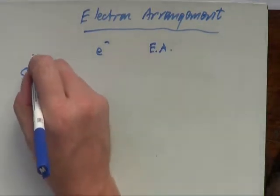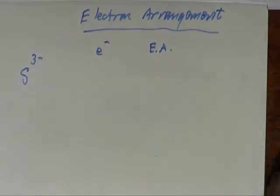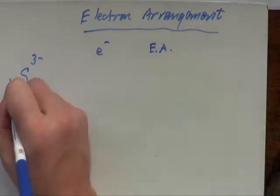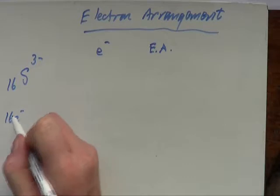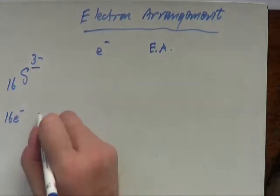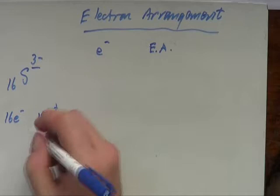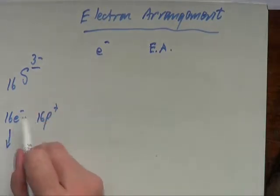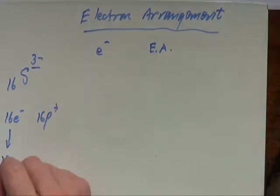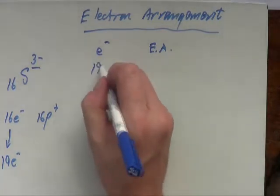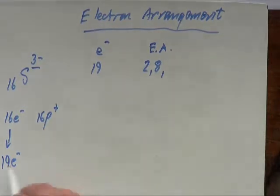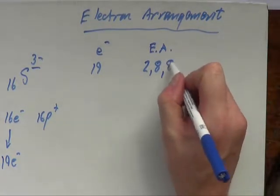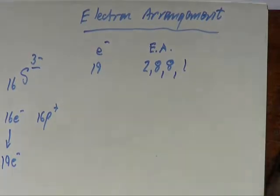Let's take sulfur with a 3− charge. Sulfur's atomic number is 16, so it originally had 16 electrons. With a 3− charge it must have three more negatives than positives, so it must have 19 electrons. Two in the first shell, eight bringing us to ten, then eight more bringing us to 18, and one in the final shell — giving 2,8,8,1.